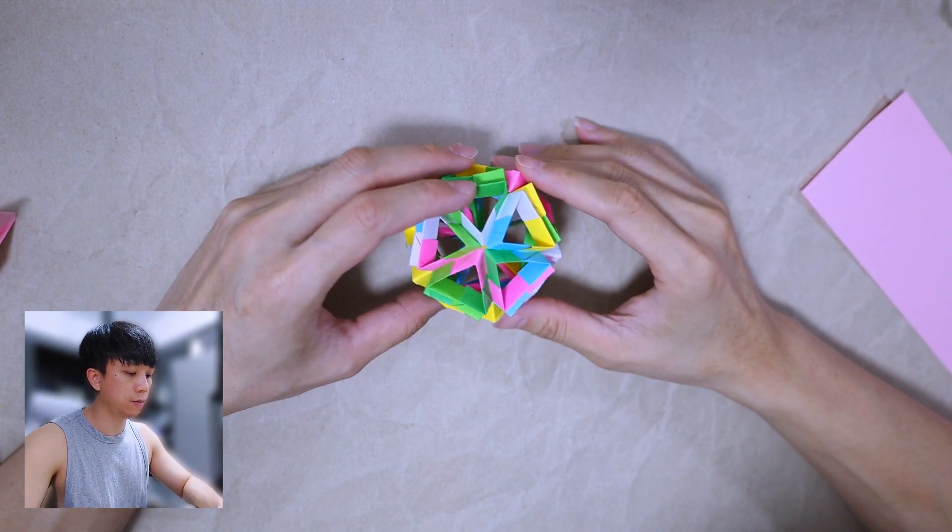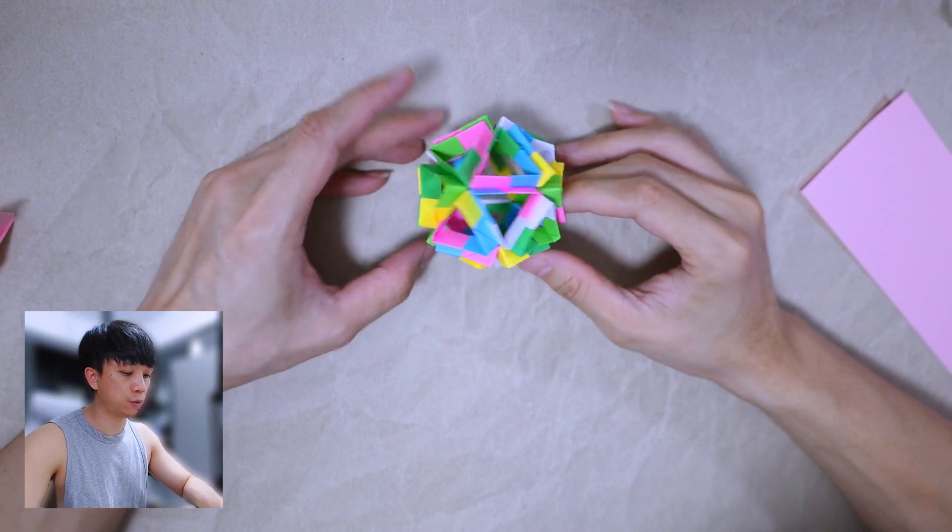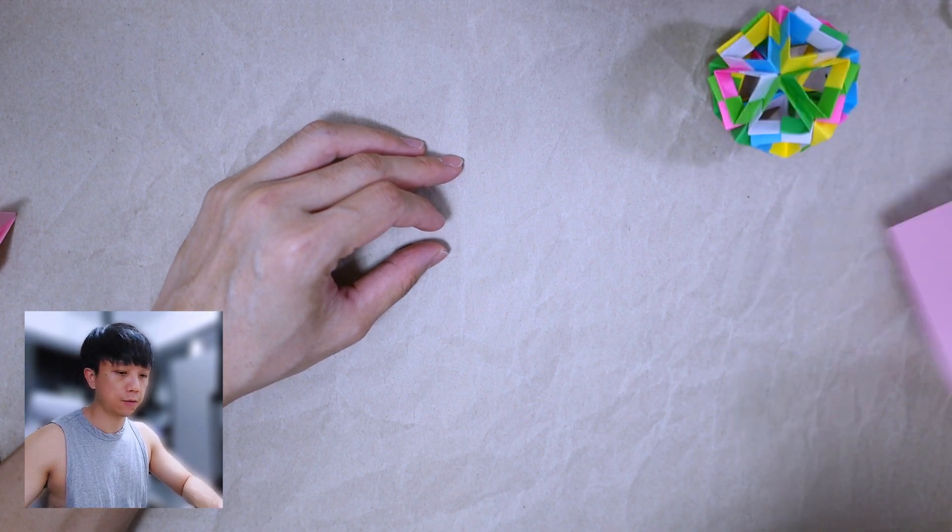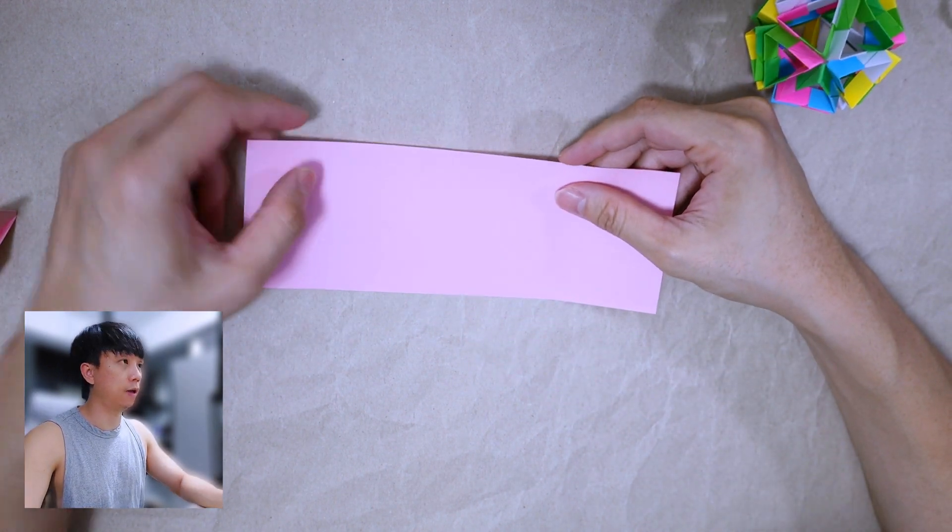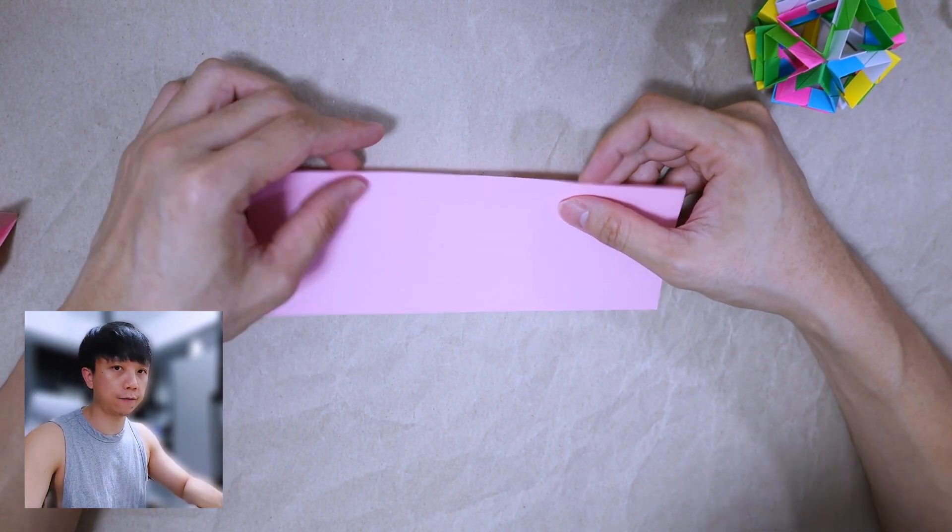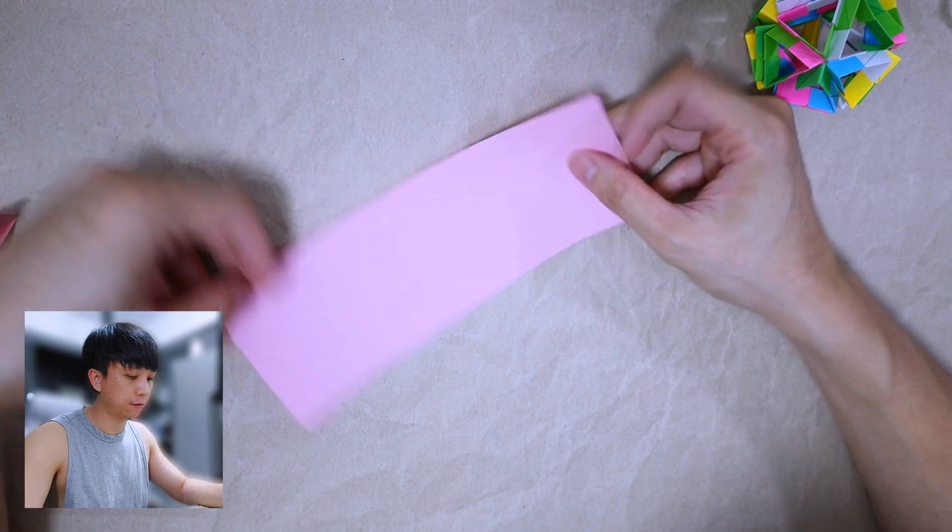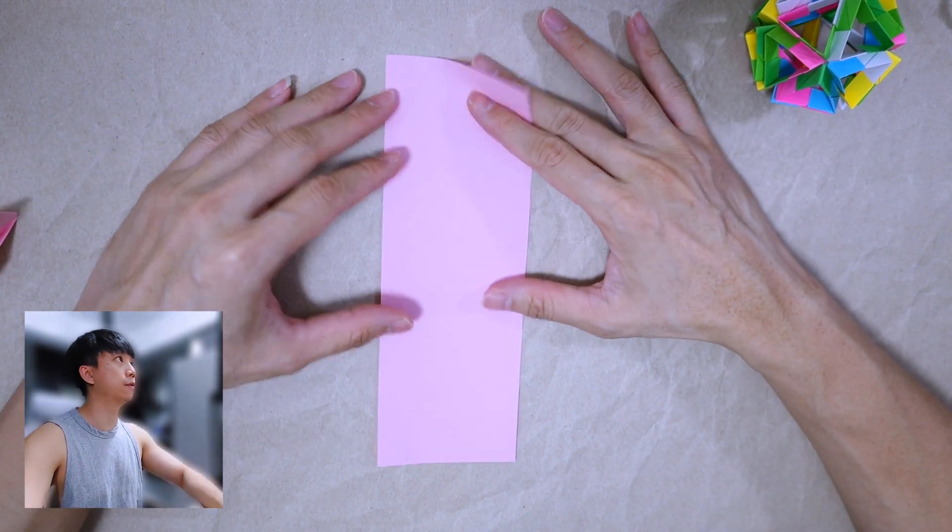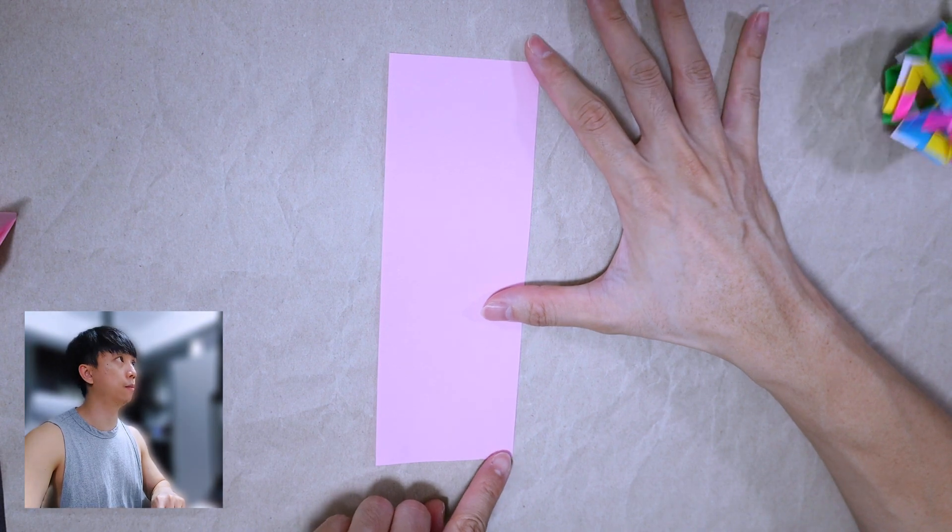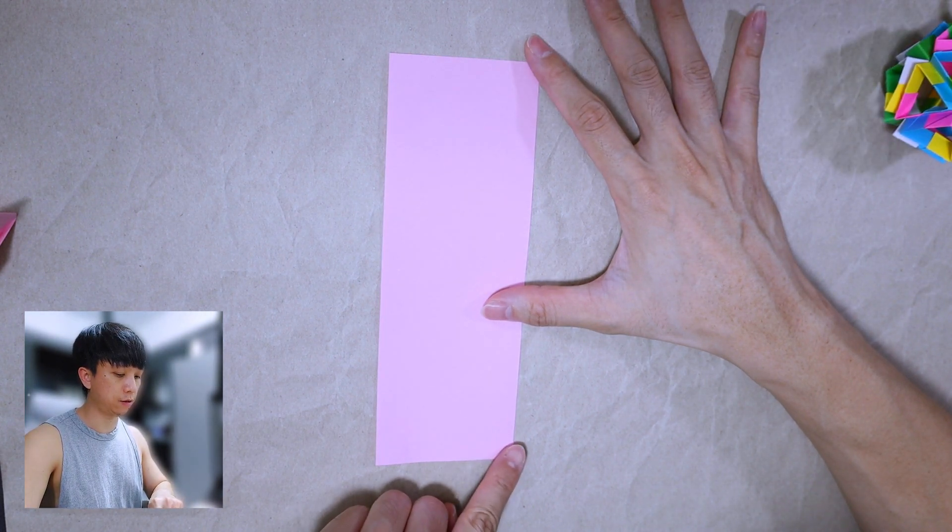We are going to make this straight edge module. Start with an A4 cut into half, and start off from this direction, go from this lower right to upper left, hold it like this.